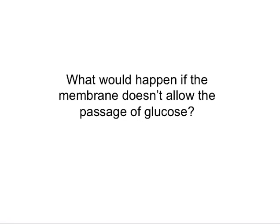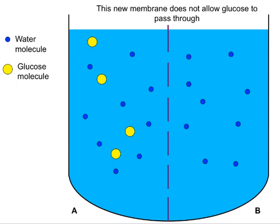Now let's see what happens if the membrane does not allow the passage of glucose — the pores are too small for glucose to pass through. This membrane is still semipermeable; it still allows smaller molecules such as water to go through, but not glucose. We add glucose to the same side of the container. Now the area with glucose has become hypertonic — it has a higher concentration of solute — while the other side is hypotonic, with a lower concentration of solutes. Since glucose cannot pass through, as you can see, the pores are too small for glucose to diffuse.